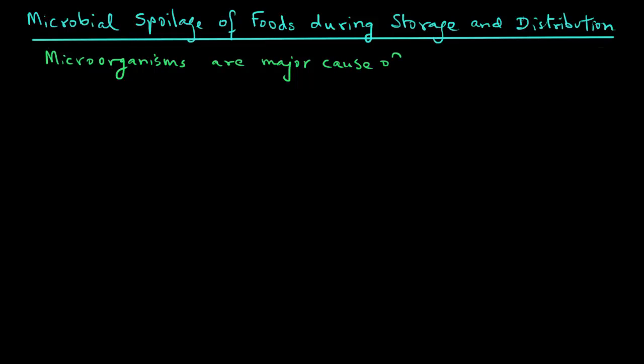Microorganisms are certainly the major cause of food spoilage. There are two types of microorganisms that we are most concerned with: pathogenic organisms.